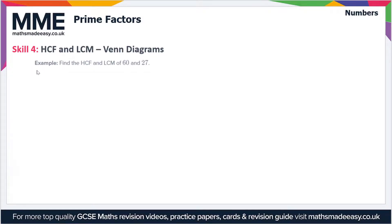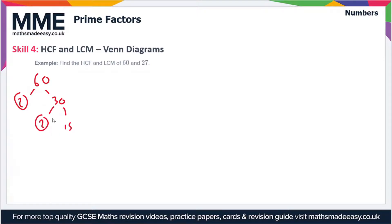We'll start with 60. We can divide this into 2 and 30. Now 2 is prime, so we'll circle it. Then 30 divides into 2 and 15 — we'll circle the 2 — and 15 divides into 3 and 5. So this is the prime factorization of 60: we've got 2 times 2 times 3 times 5.